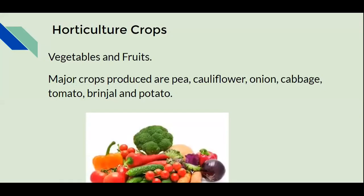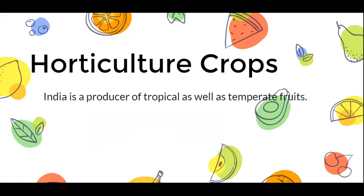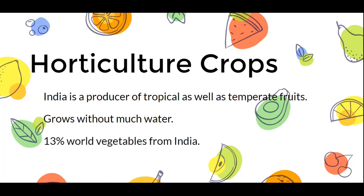Now we are going to talk about horticulture crops. Vegetables and fruits are mainly considered horticulture crops. Major crops produced are pea, cauliflower, onion, cabbage, tomato, brinjal, and potato. India is a producer of both tropical and temperate fruits. One important feature of horticulture crops is that they grow without much water, making cultivation easy. India produces 13 percent of the world's vegetables.